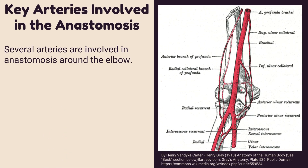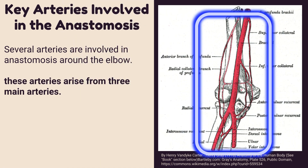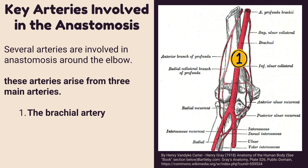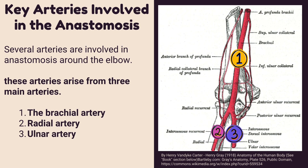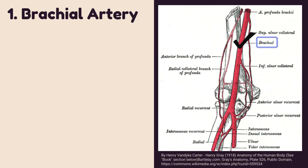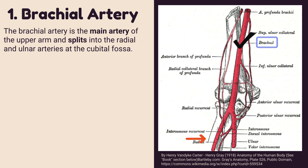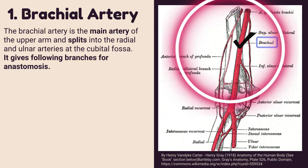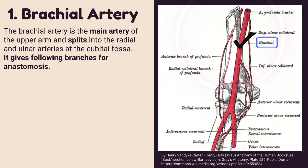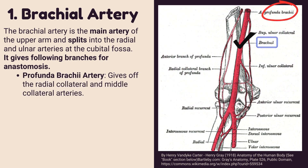Several arteries are involved in anastomosis around the elbow. These arteries arise from three main arteries: the brachial artery, the radial artery, and the ulnar artery. The brachial artery is the main artery of the upper arm and splits into the radial and ulnar arteries at the cubital fossa.